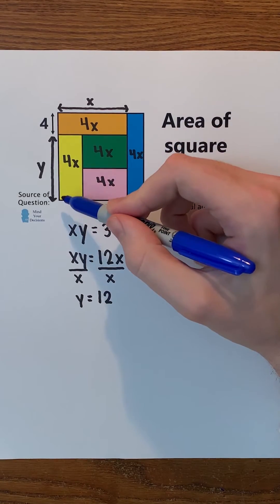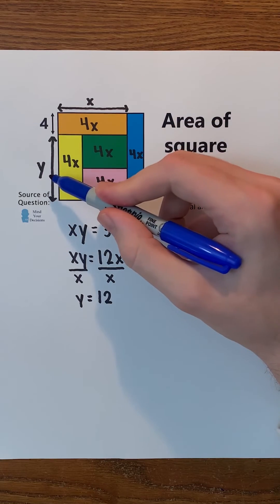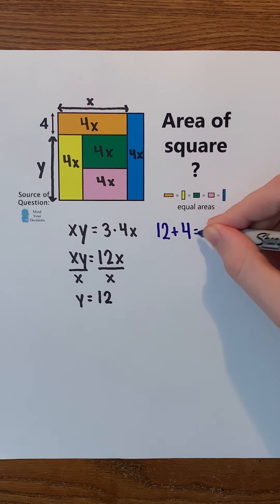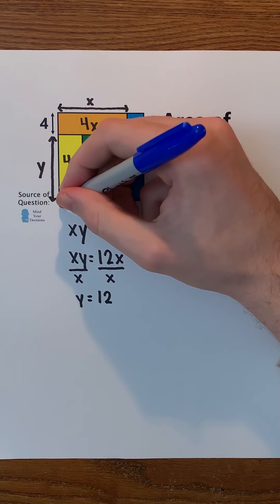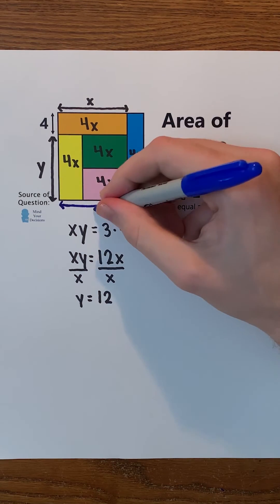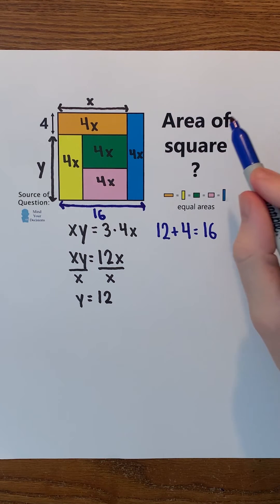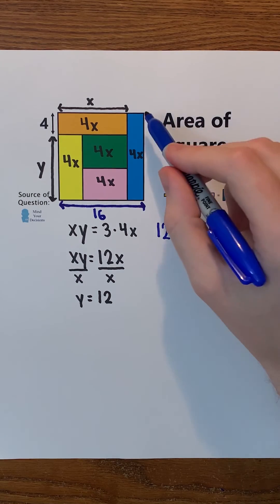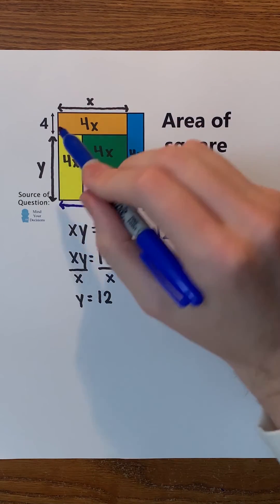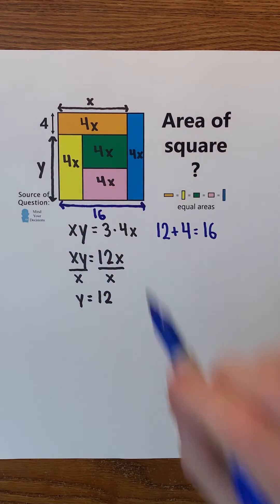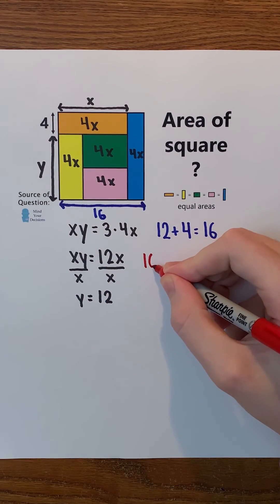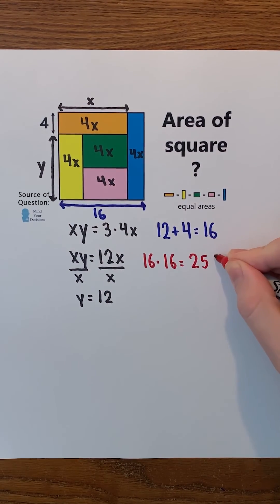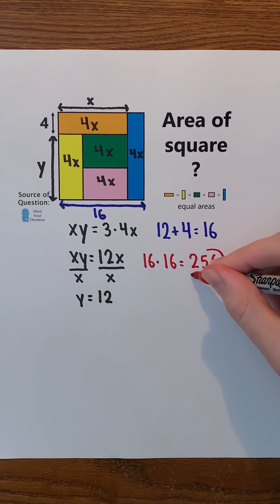Therefore, the length of a side of the square must be the value of y, which is 12, plus 4. This is just 16. Therefore, the area of the square must be 16 times 16, since each side of a square has the same length. And 16 times 16 is just 256, so the area of the square must be 256.